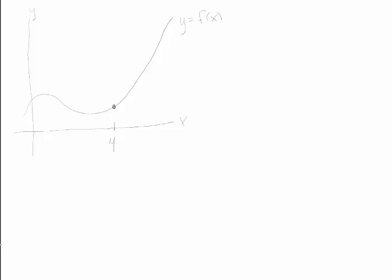So that's one interpretation of the derivative, the instantaneous rate of change. Another way of interpreting the derivative is as the slope of the tangent line.